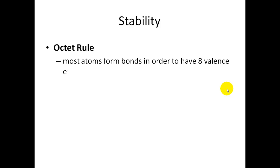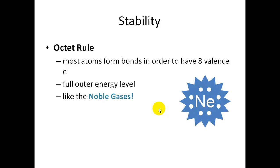There is an octet rule. Most atoms will form bonds in order to have eight valence electrons, which we talked about earlier. They want to have a full outer energy level. An example of this are the noble gases. They're on the very far right of your periodic table. And so, example is neon. And if you can see, neon has eight valence electrons. It is stable and very unreactive.